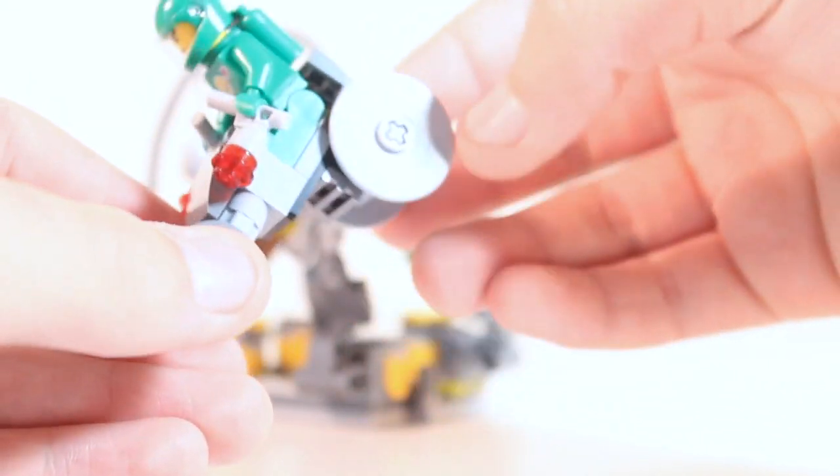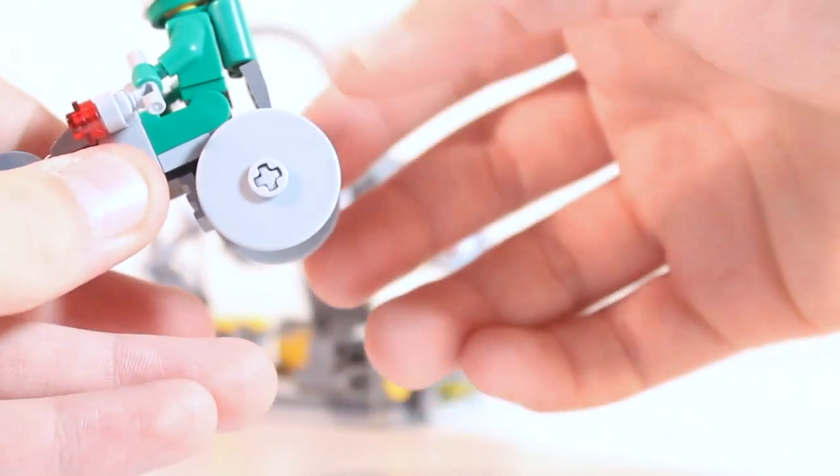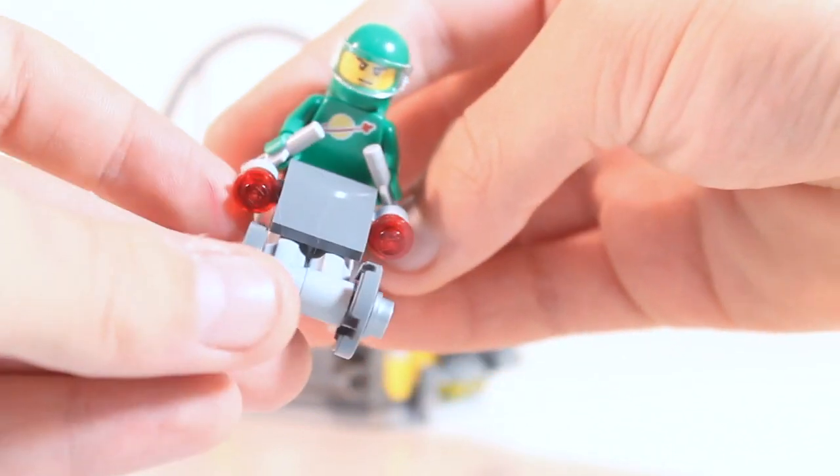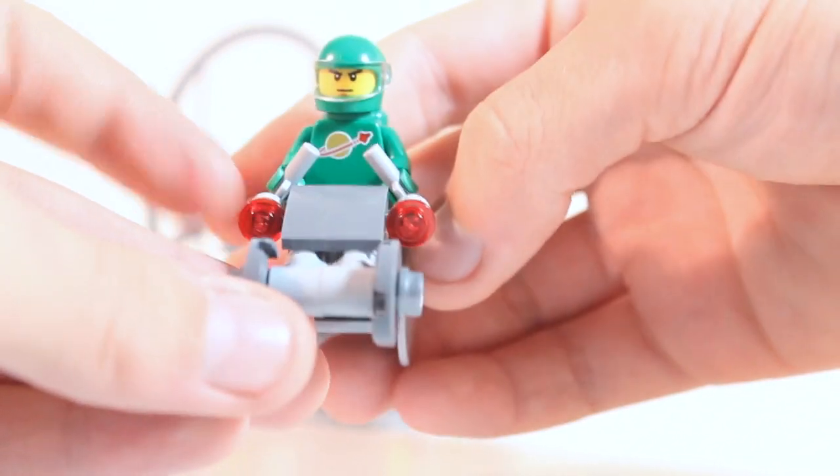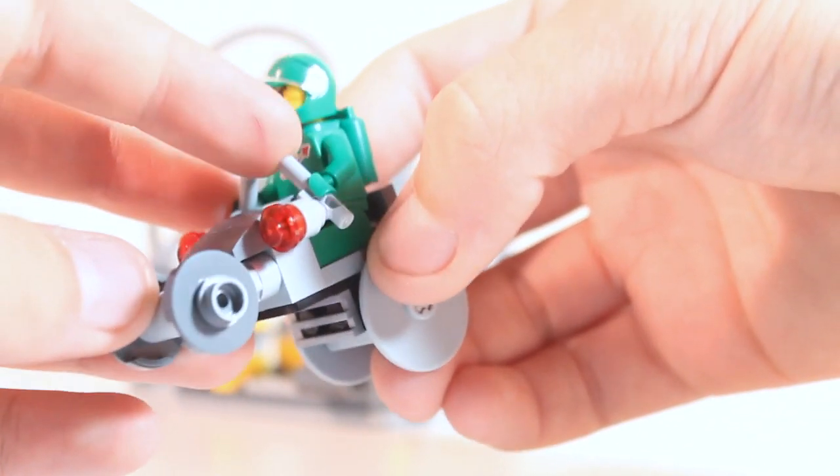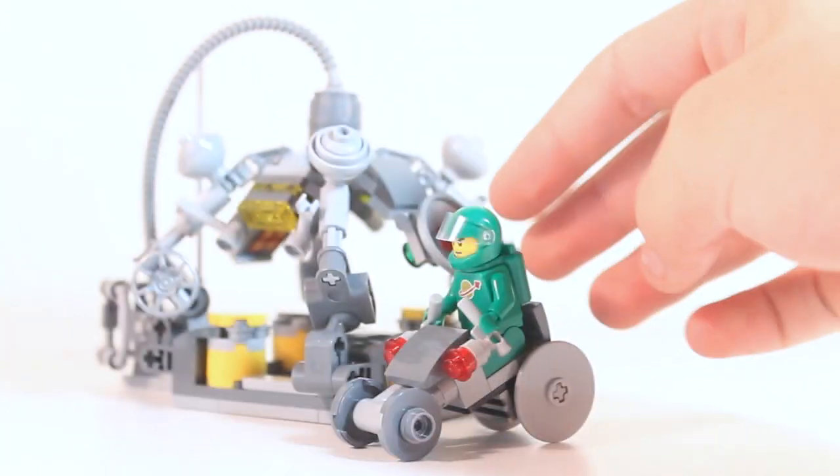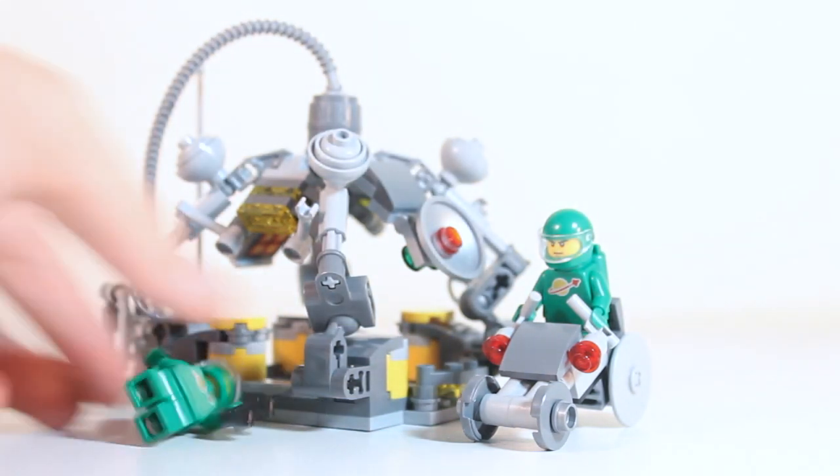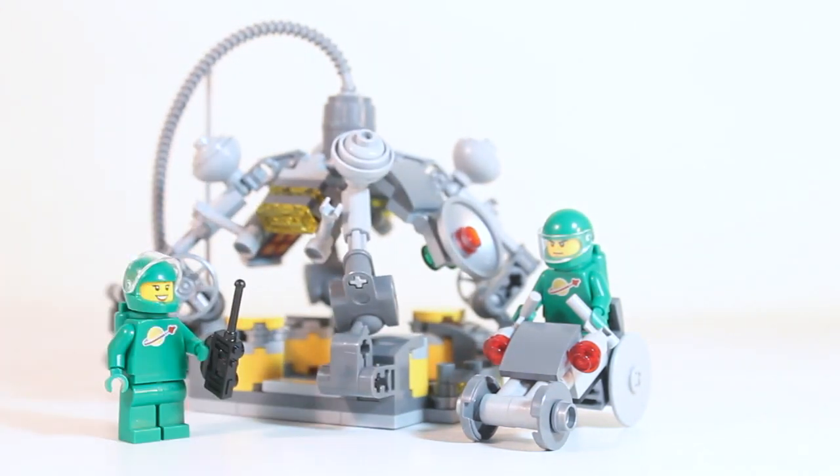And then I used these, there are three studs long, these Technic wheel bricks for that. And also, here are just some more details added. Some of these red lights, and also these two handlebars right here, and then there's the back. So he can go right around in the base camp, and so there is your planetary base camp.